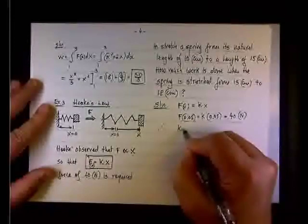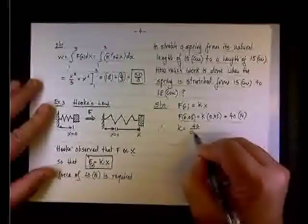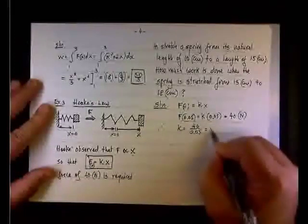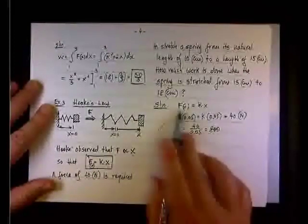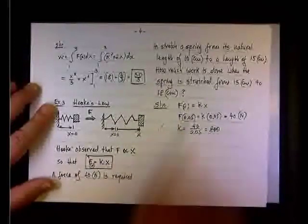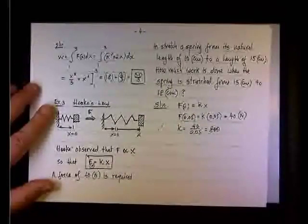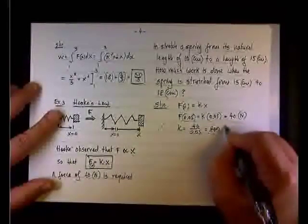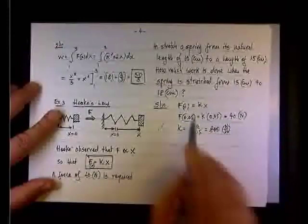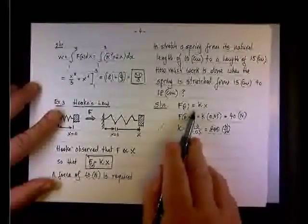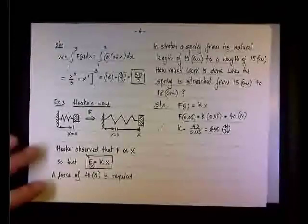So what is k? Therefore, k equals 40 divided by 0.05 or 800. And the unit of k, if you look here, the product k times x is to produce newton. x is in meters, so k has to have the unit of newton divided by meter. So now, you have newton divided by meter, times meter gives you newton. So, we check the unit.